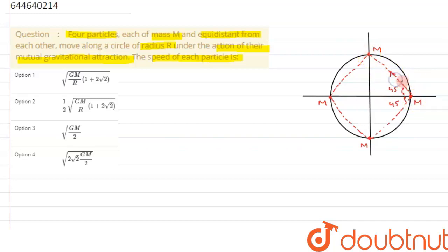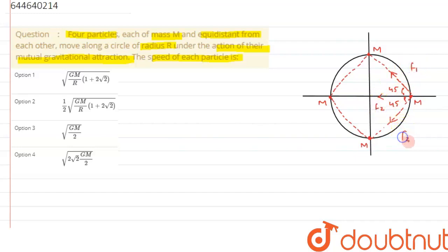The force on this mass due to the adjacent mass will be in this direction — that is an attractive force. Due to the opposite mass the force will be in this direction, and due to the other adjacent mass it will be in this direction. Let's call them F1, F2, and F3. We will calculate the speed of this particle, so we consider the total force on it.